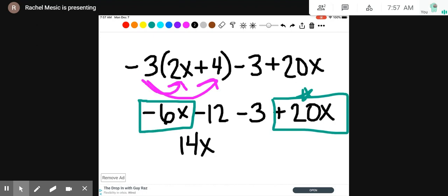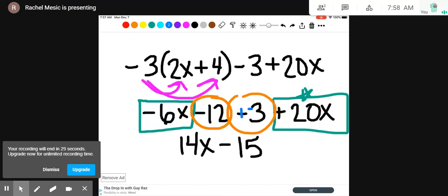Then for the integers, we have negative 12 minus 3 more. So you can think about it as being negative 12 degrees out and the temperature drops 3 degrees, which would make it negative 15. Or you can view this as negative 12 minus 3 and change subtraction to addition and then make the next number the opposite. Negative 12 plus negative 3. That's a horrible day. You lost $12 and then you lost $3. Altogether, you lost $15.